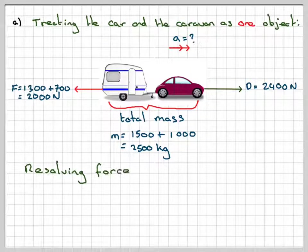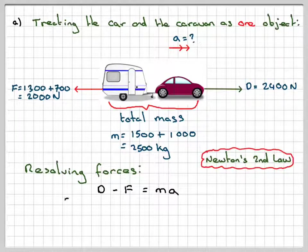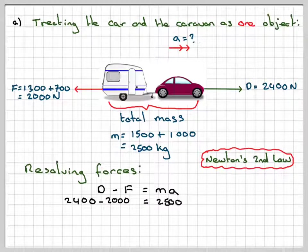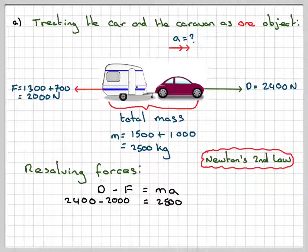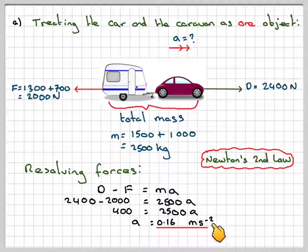Drawing a good diagram helps solve these problems. Resolving forces using Newton's second law: D minus F equals mass times acceleration. So 2,400 minus 2,000 equals 2,500 times A. That gives 400 equals 2,500A, so A equals 0.16 metres per second squared.